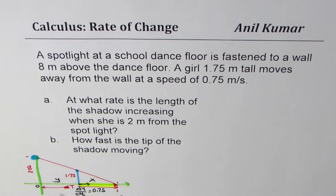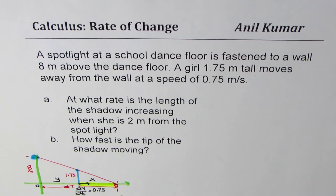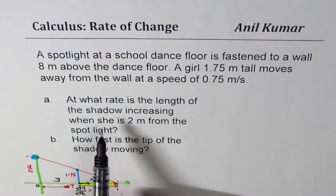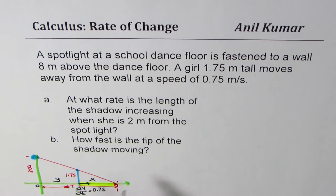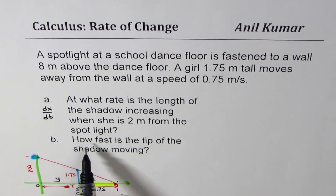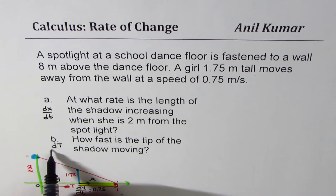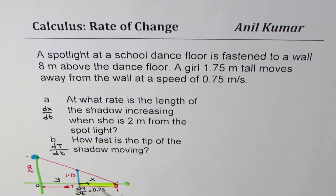From the diagram, it is very clear: the height of the lamp is 8 meters, height of the girl is 1.75 meters, distance of the girl at any time is Y, and the distance of the tip is X plus Y. In the first case we need to find dx/dt, and in the second case we need to find dT/dt. You can always pause the video, try it out, and then look at my suggestions.